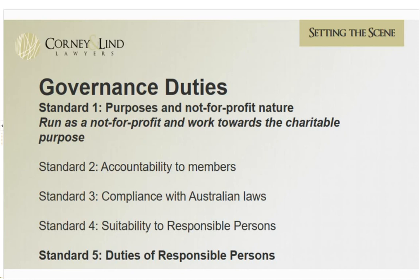Other governance standards require charities to comply with Australian laws and not commit serious offences. There's also a standard on responsible persons — for companies, directors; for incorporated associations, management committee members — requiring charities to take reasonable steps to ensure responsible persons are not disqualified from managing corporations and are adequate to run the charity, and to remove those who don't meet these standards. The final and most important standard is the duties of responsible persons, which breaks down into a further subset of specific duties.